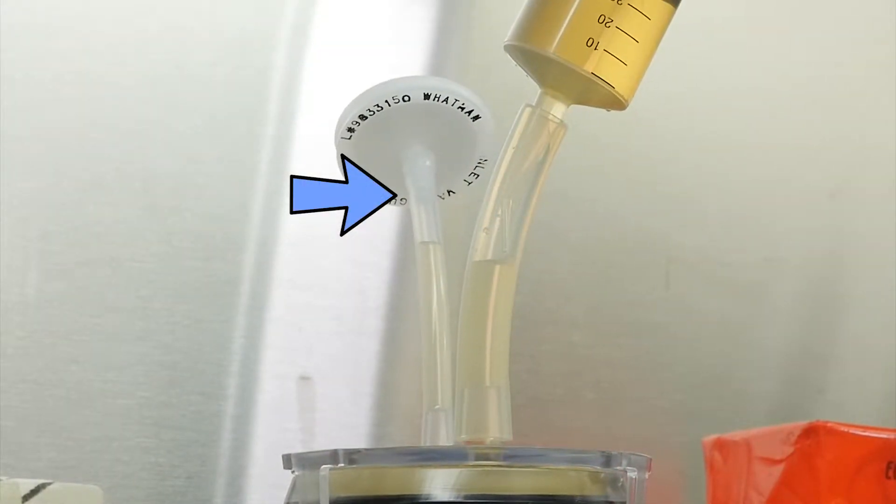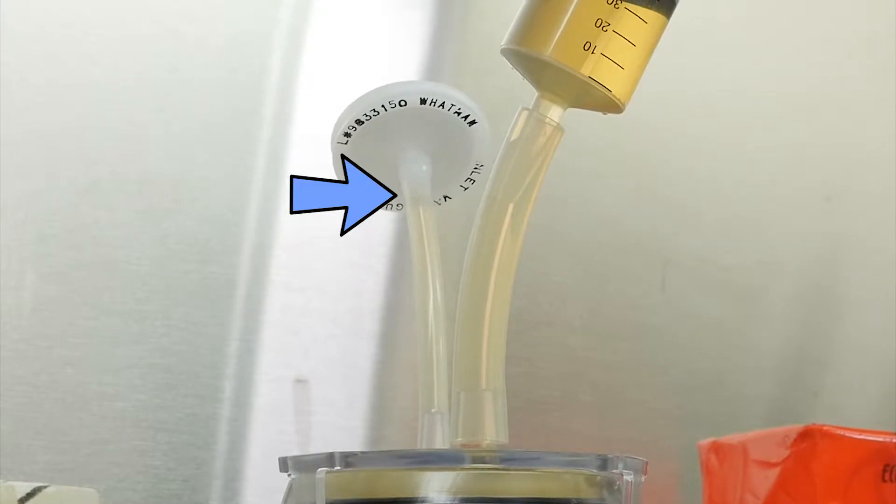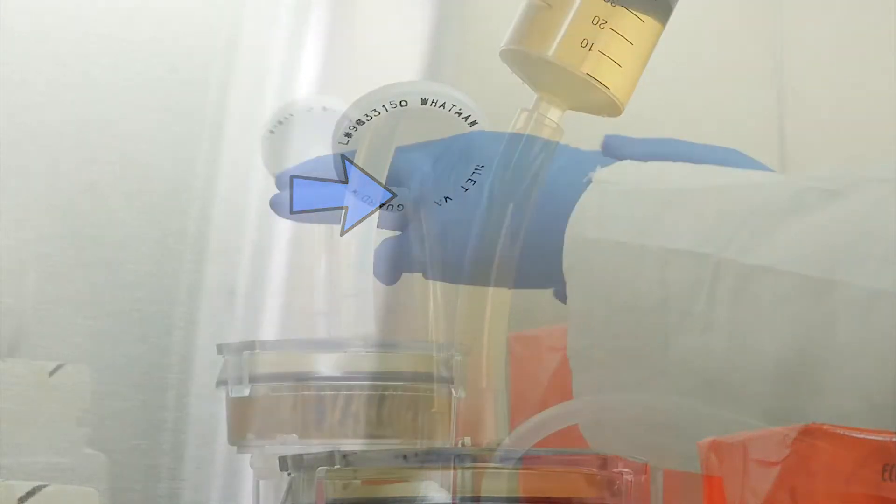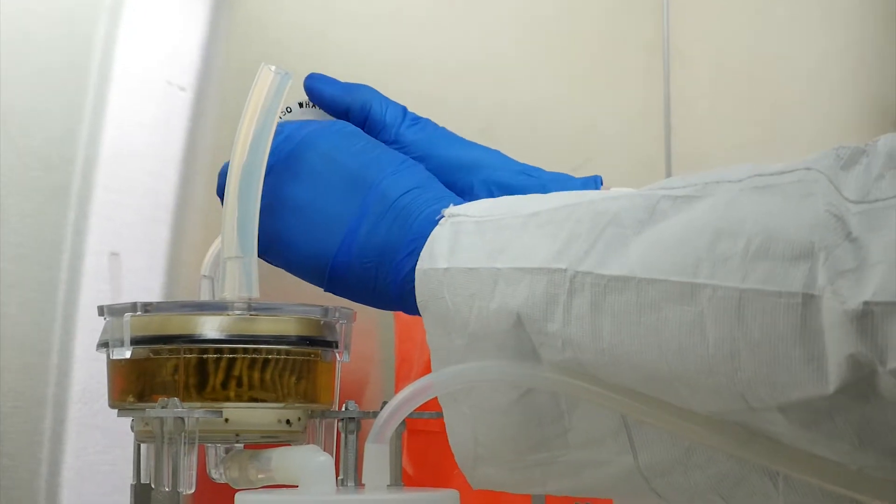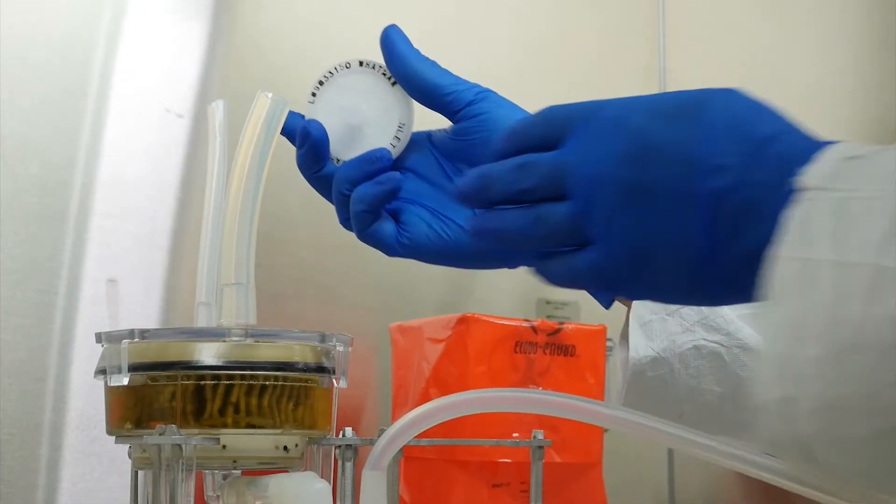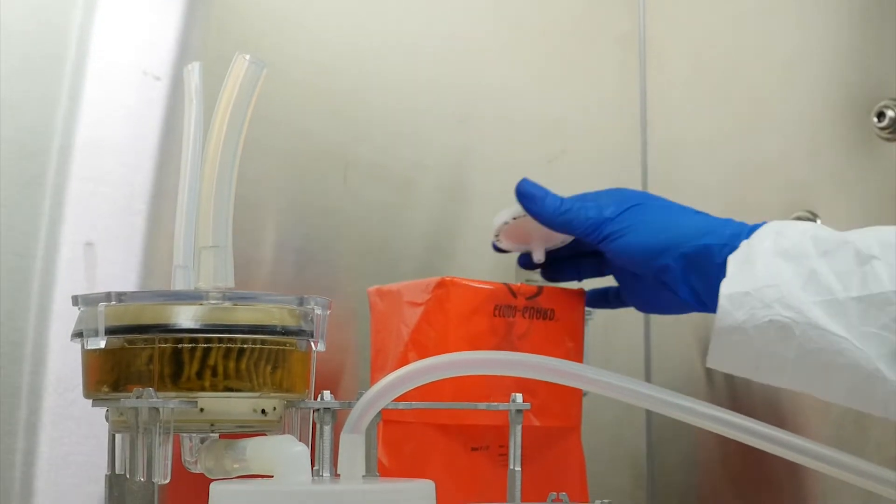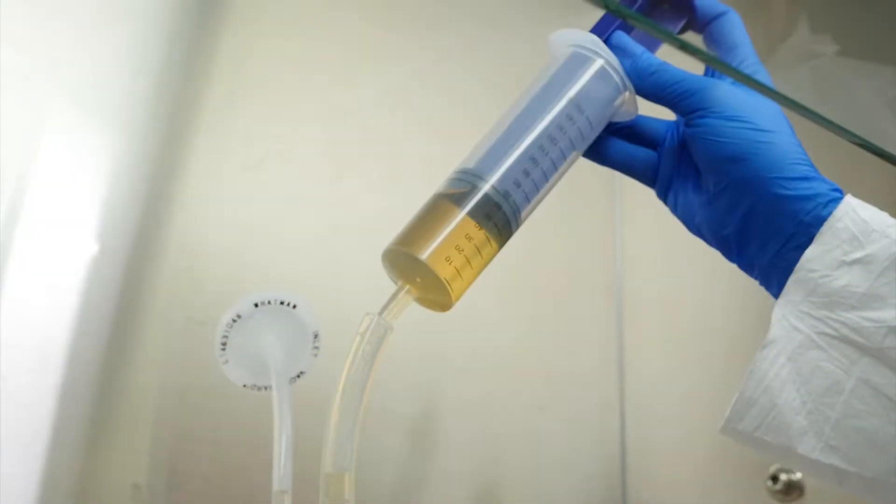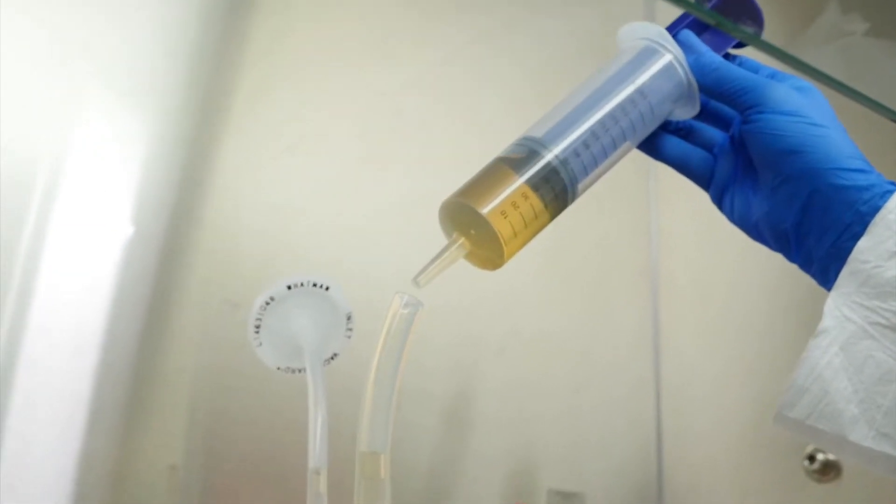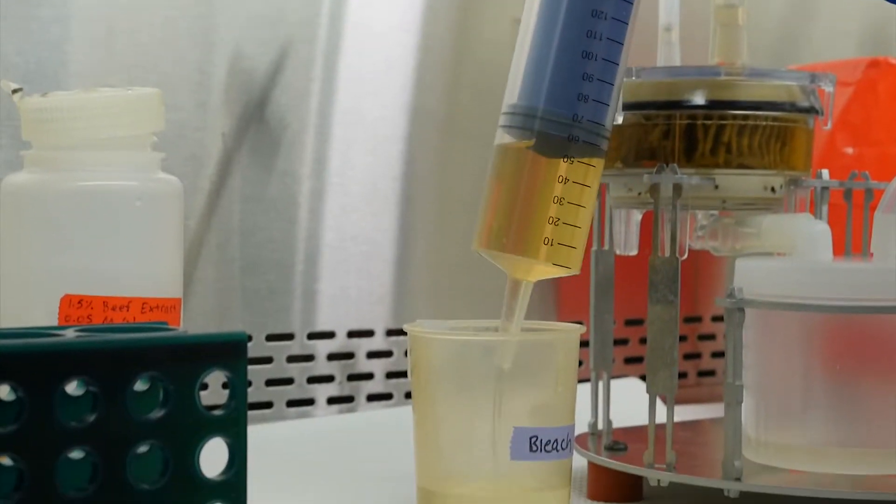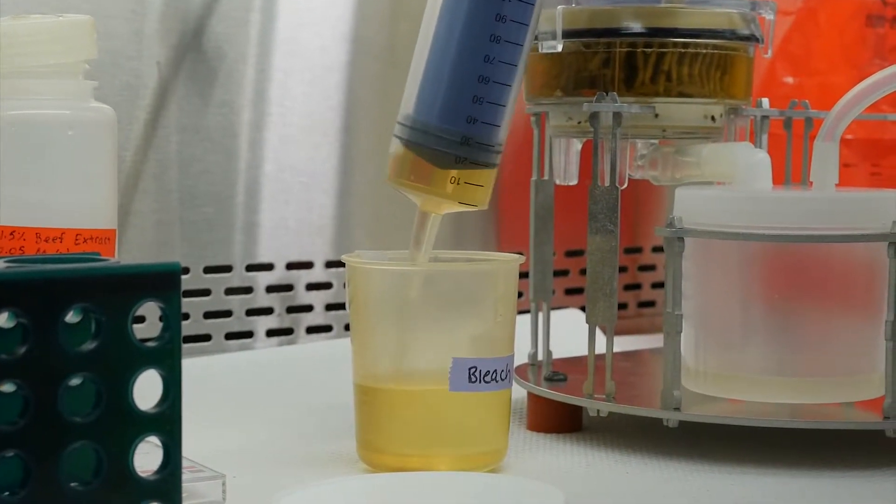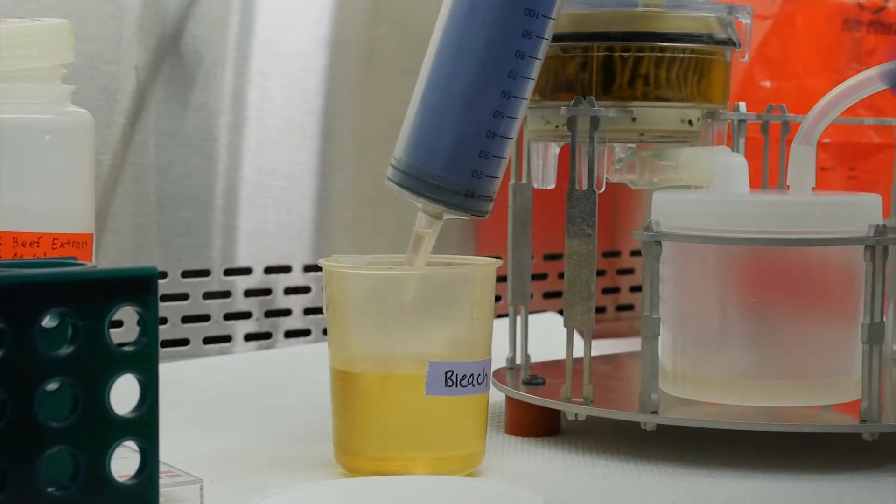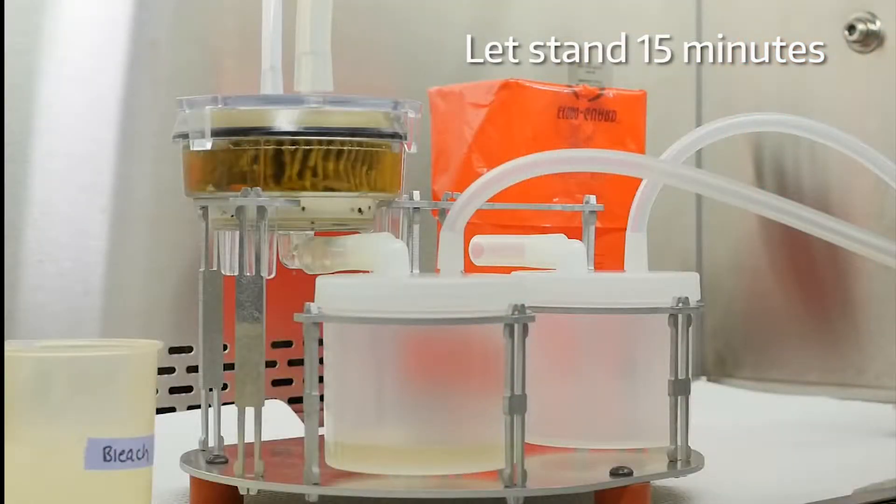As you slowly inject the beef extract, watch to ensure the liquid does not contact the VacuGuard filter. If the liquid does contaminate the VacuGuard filter, pause injection. The contaminated VacuGuard filter should be autoclaved and disposed of. Replace the VacuGuard filter with a new filter. If the ViroCap filter cavity completely fills with liquid prior to injection of the full 150 milliliters, stop injection and dispose of excess eluent into the bleach container. When eluent injection is complete, let the filter stand for 15 minutes to allow the organisms to desorb from the ViroCap filter.